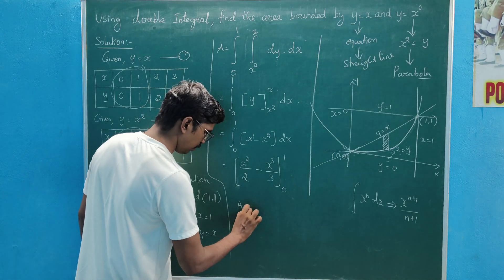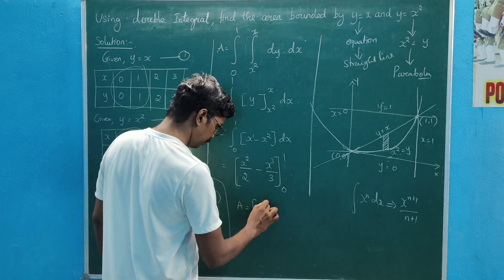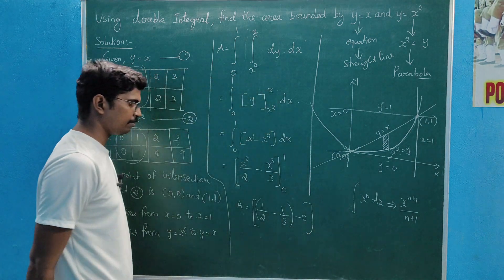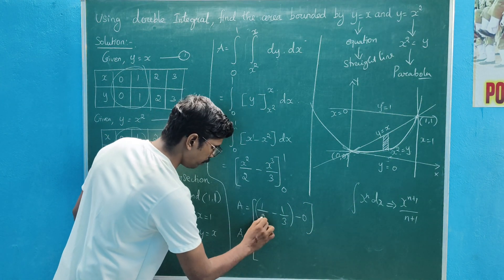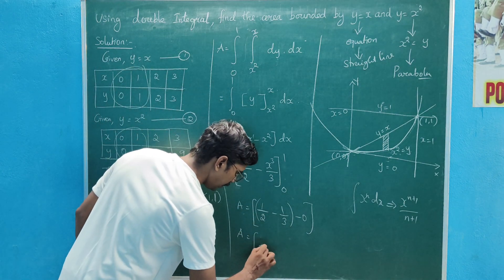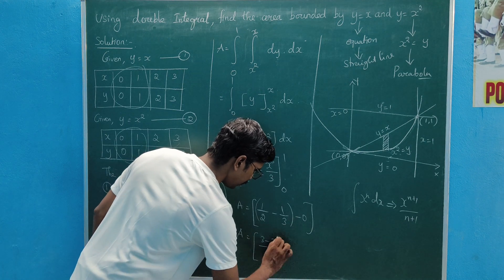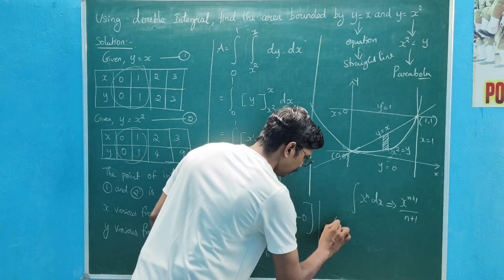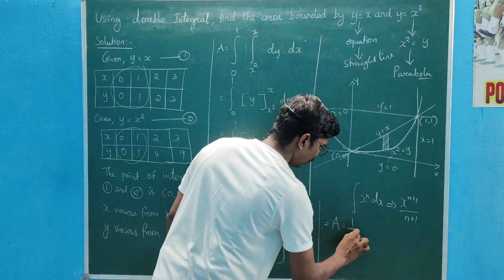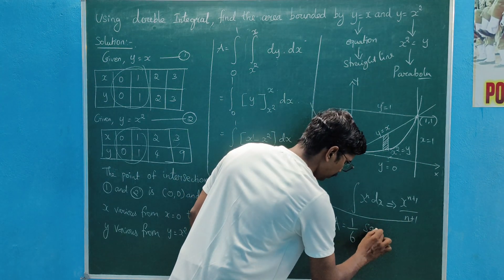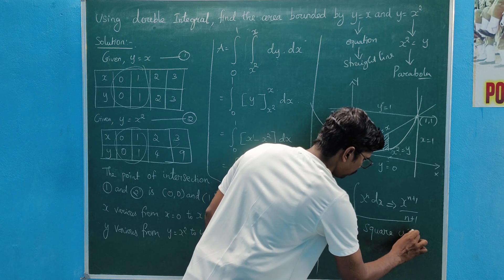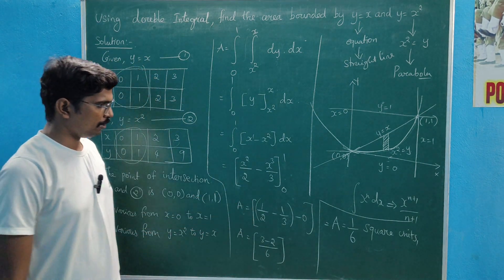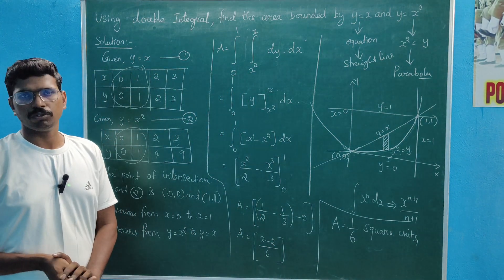A equal to 1 by 2 minus 1 by 3. The LCM is 6, so 3 minus 2 equals 1. Therefore A equal to 1 by 6 square units. Area equal to 1 by 6 square units.